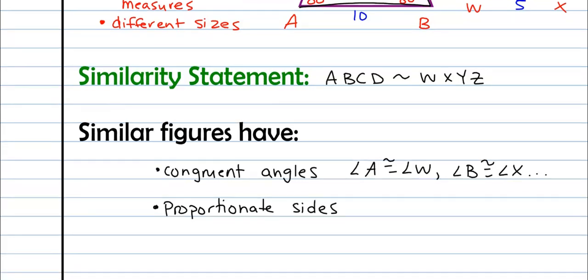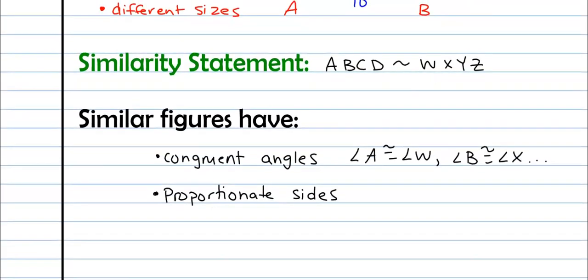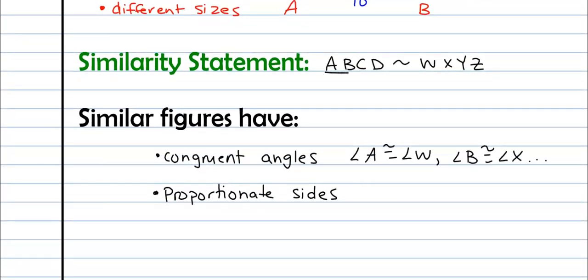And we talked a little bit about what proportions are already, but basically from that similarity statement we can say that AB to WX is equal to BC to XY, which is equal to CD to YZ, and finally that's equal to AD to WZ.